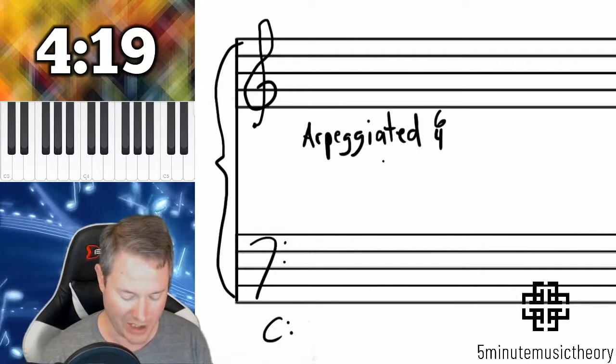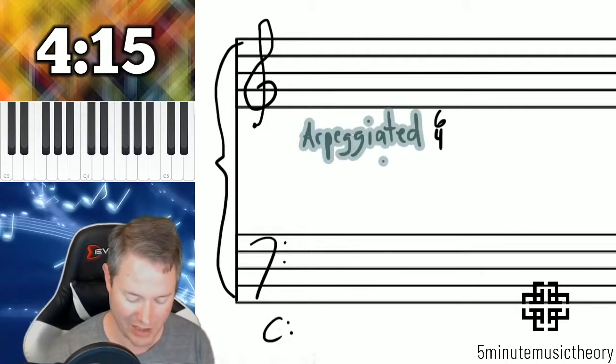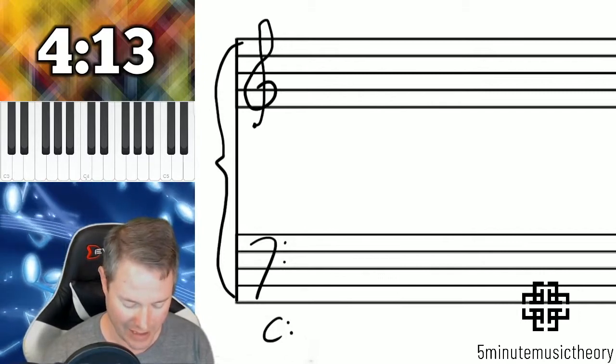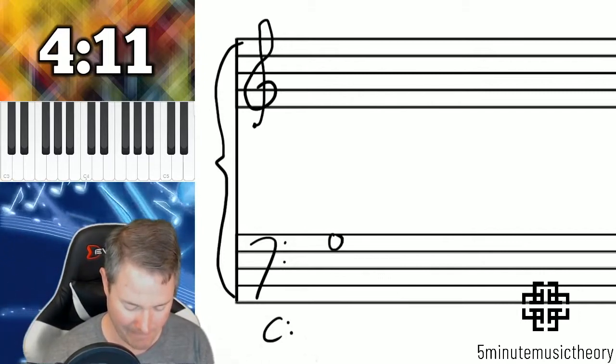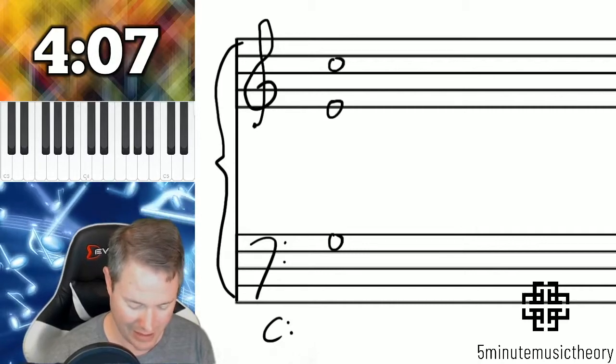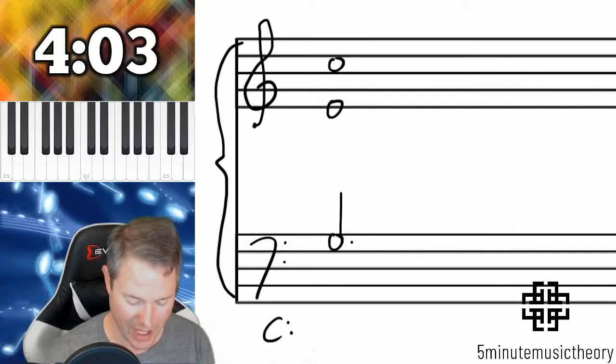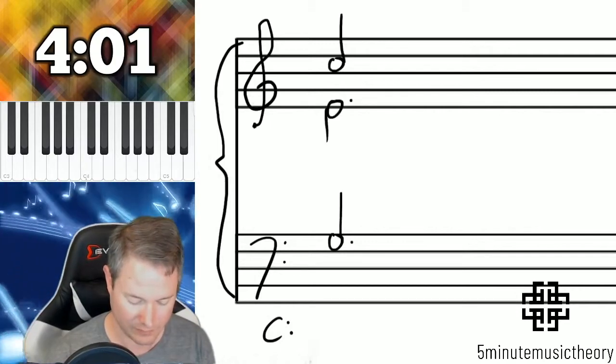The concept of the arpeggiated 6-4 is that you have a chord with the bass note changing. We're going to do it like this: let's put a G, an E, and a C. We'll make those into dotted half notes.